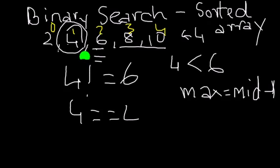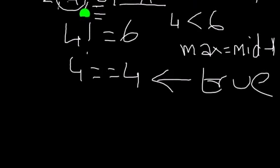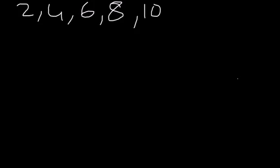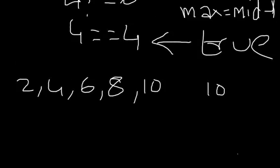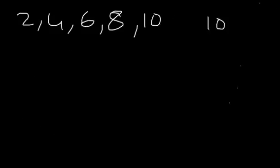It checks whether 4 equals 4 — that returns true, and the binary search is done. This example took two steps: first it checked 6, then it checked 4. With linear search it would also have taken two steps — first checking 2, then 4 — so at this point you're not quite seeing the advantage of binary search.